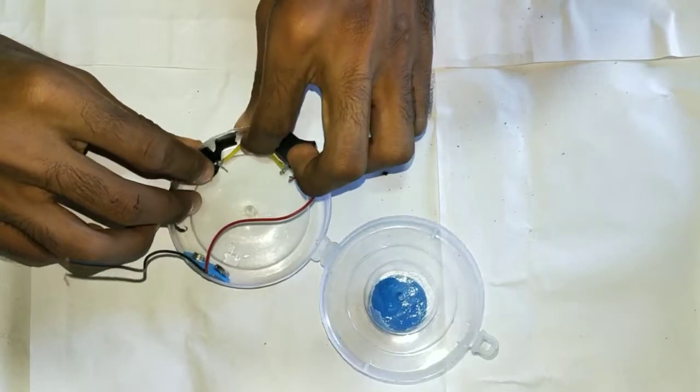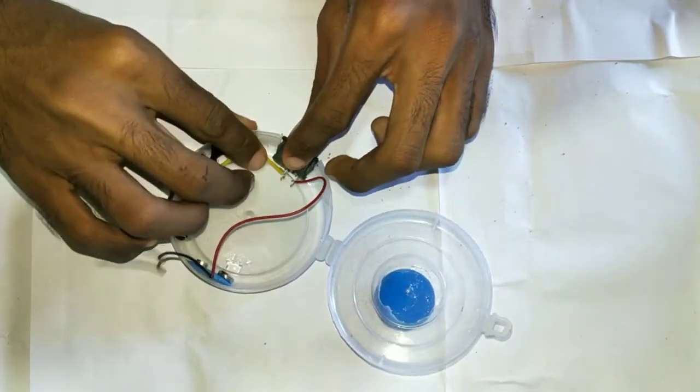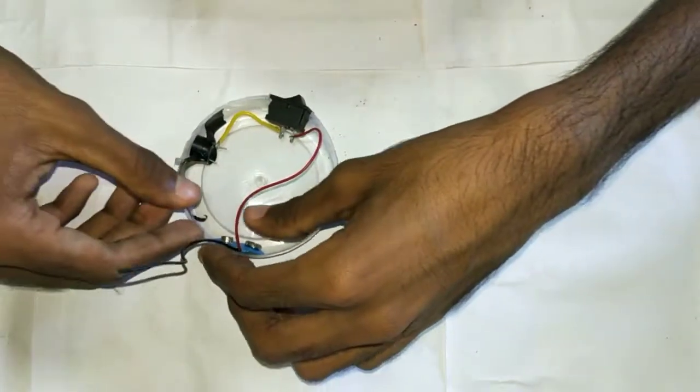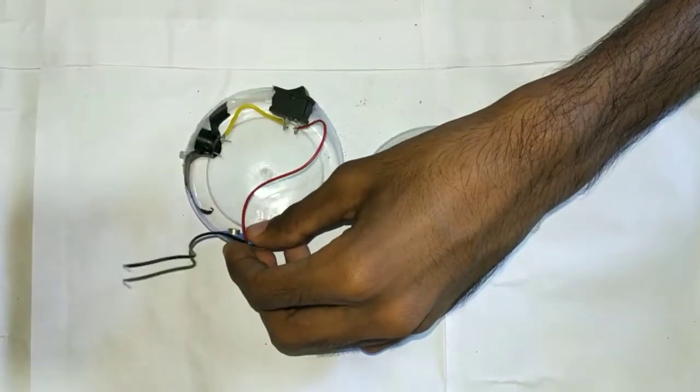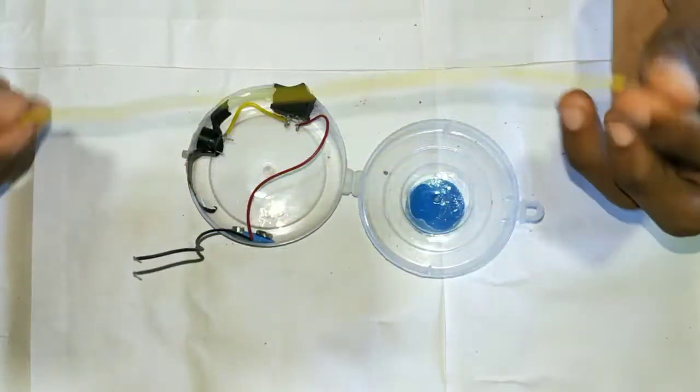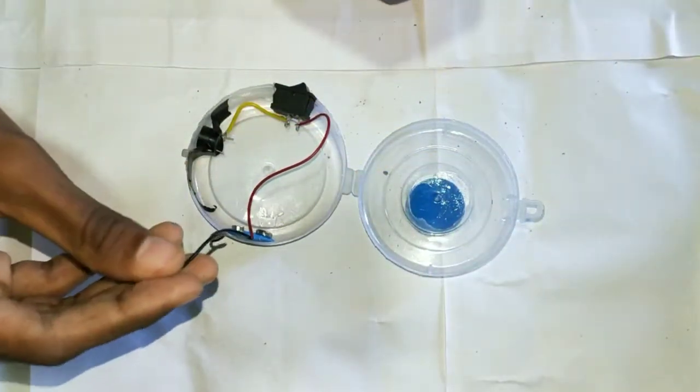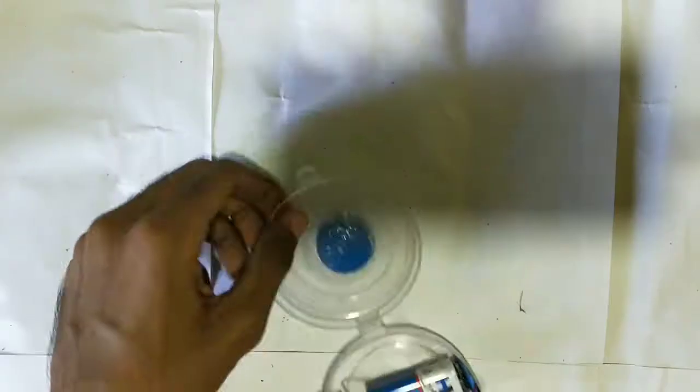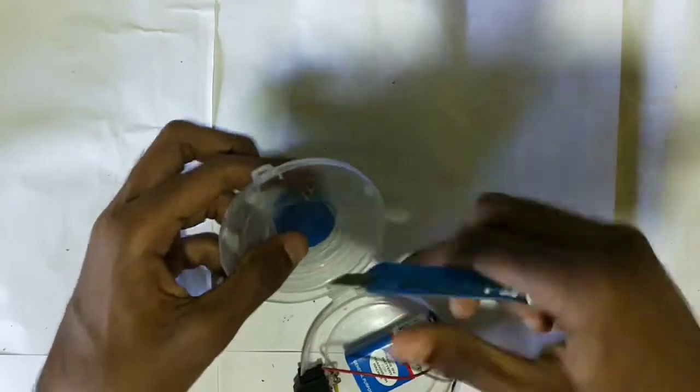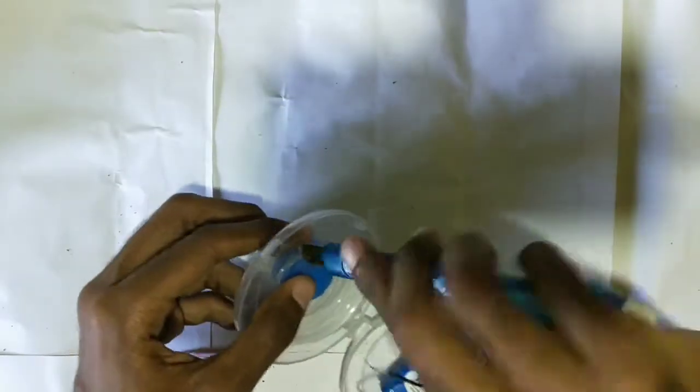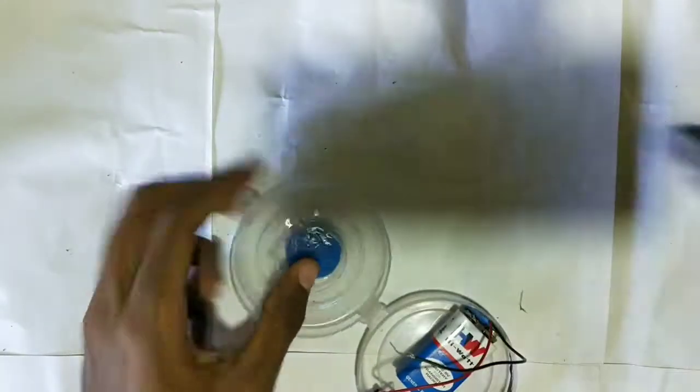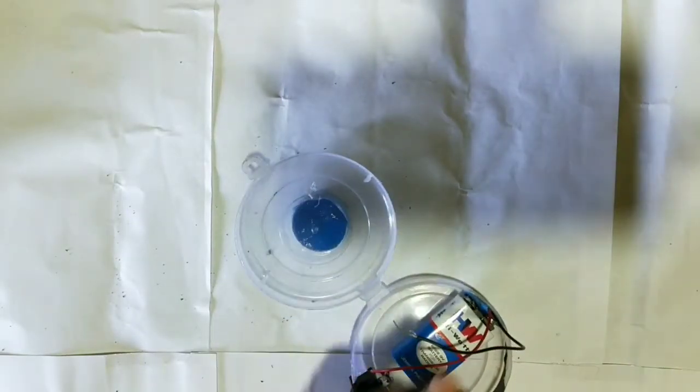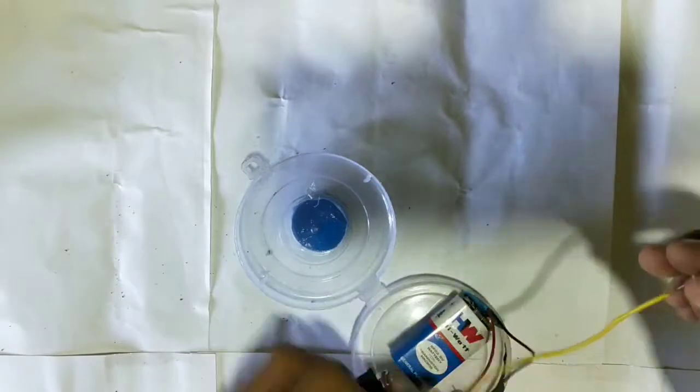We need to get a wire to do the same thing. We need this one with black wire. We need to get a wire to put it in the middle of the wire. We need to get a wire to work with the same thing.